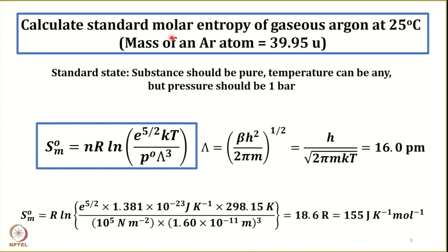Standard state means the substance should be pure, temperature can be any, but pressure should be 1 bar. Keep this definition of standard state in mind. So in the Sackur-Tetrode equation, we use S_M⁰, where M represents molar and the naught superscript denotes standard state. The pressure P⁰ is 1 bar. Since they want us to calculate standard molar entropy, we automatically set the pressure equal to 1 bar.